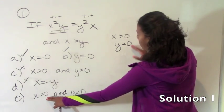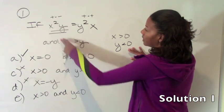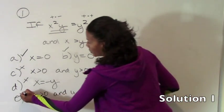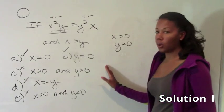Because if x is greater than zero and y is less than zero, the left side is negative and the right side is positive. So e is not true. So the answer is a and b only for number one.